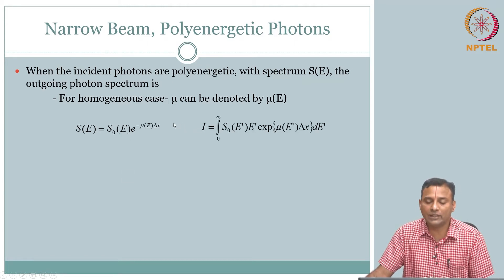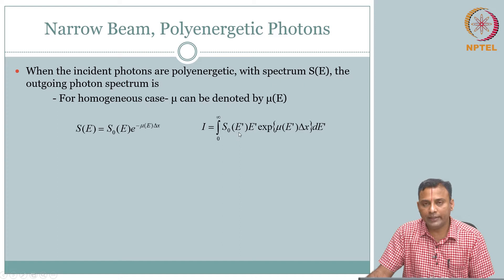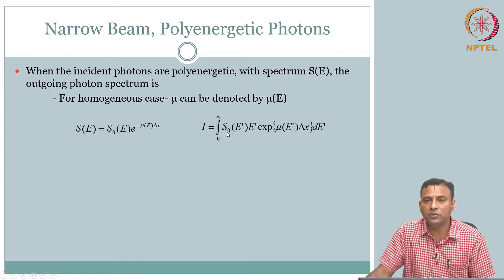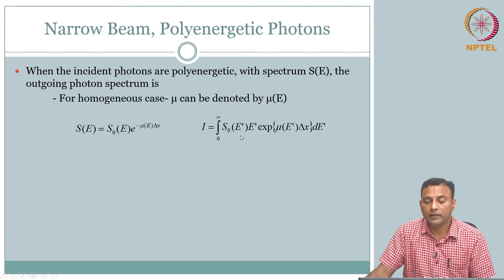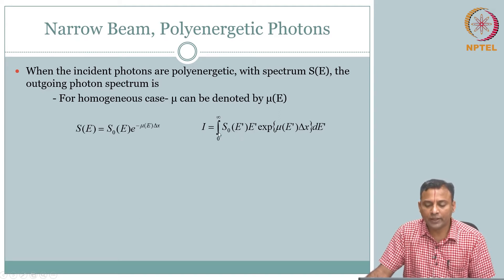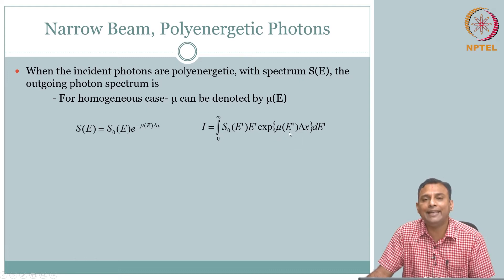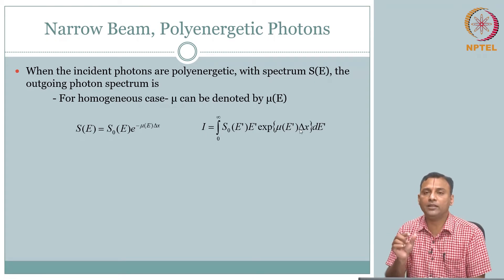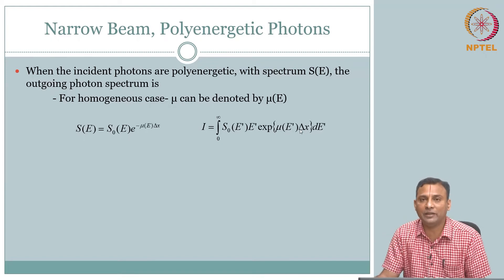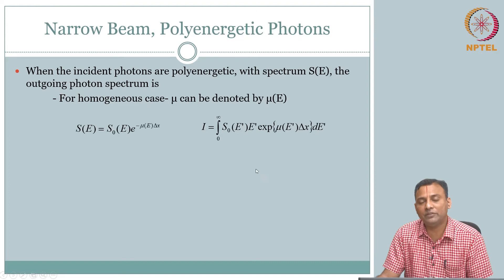You can also write the intensity counterpart: I is the number of photons in the spectral line at energy E' multiplied by the energy per photon at that level — same definition as before, now contextualized with mu(E'). The slab still has one thickness Δx; we're examining what happens when it is hit by a poly-energetic source.